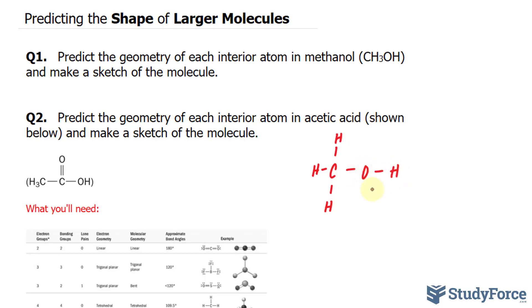To come up with the Lewis structure, we need the total number of valence electrons. So we have one for each hydrogen, and there's four of them. Carbon has four as well, that's eight, and oxygen has six, that makes 14.